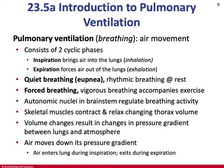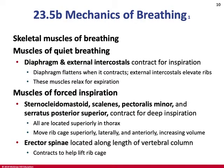Air always moves down its pressure gradient from high to low. For quiet breathing, the diaphragm and external intercostals contract on inspiration. In forced inspiration, additional muscles are called on: sternocleidomastoid, scalenes, pec minor, serratus anterior, internal and external intercostals, diaphragm, and erector spinae. These flare the rib cage out and up, increasing thoracic volume and generating greater negative pressure to pull more air in.